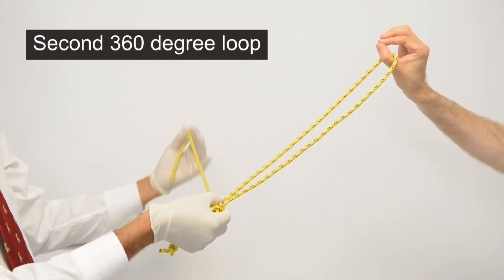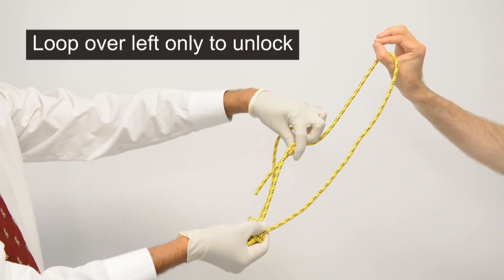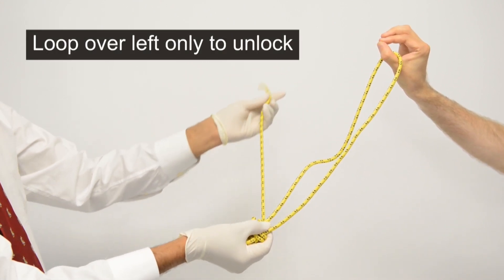Finally, to lock it, pass the end through the knot, only taking the left side of the rope to lock it on itself.